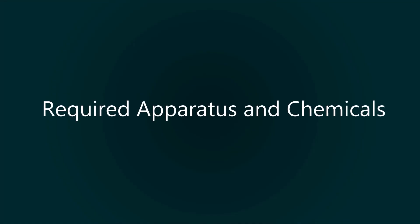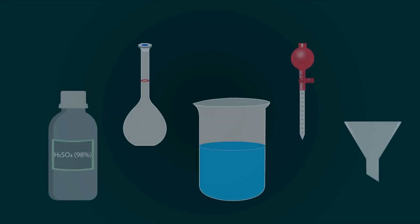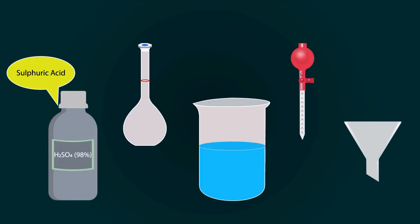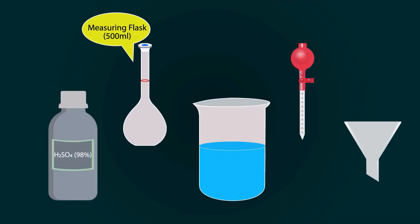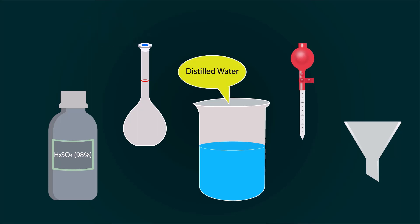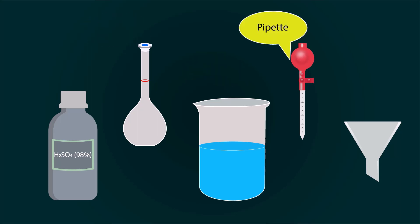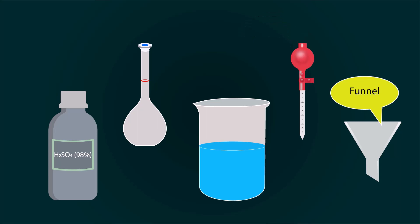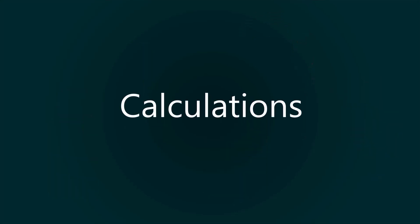Required apparatus and chemicals for this process are: 98% Sulfuric acid, volumetric flask of 500 ml, distilled water in a beaker, a pipette, and funnel. We need some calculations before preparation of solution.